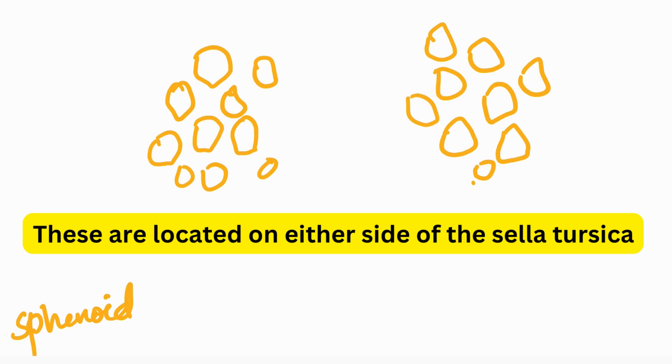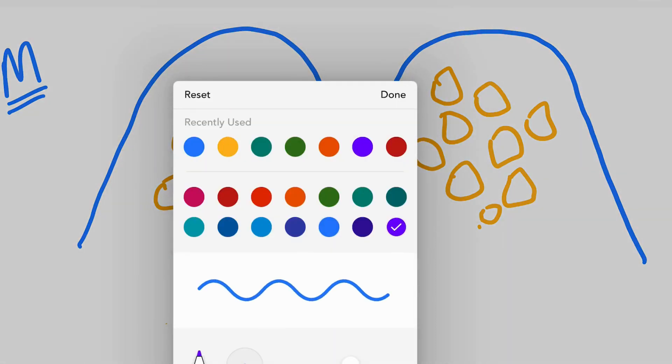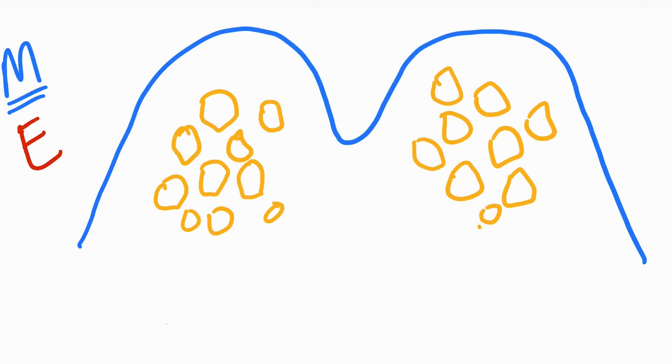The meningeal layer starts with the letter M. So let's draw an M here. Yes, M is ready and the endosteal layer, let's take another color so there's no confusion. Endosteal layer will be here. The floor, that is an E. Endosteal starts with an E, so we are writing an E like this. You'll have to look at it sideways to see the actual E.